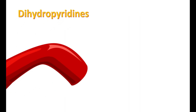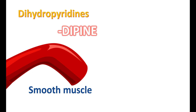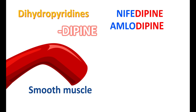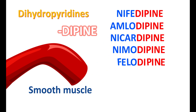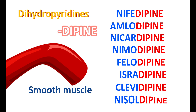Dihydropyridines are one group of calcium channel blockers selective for smooth muscle including vascular smooth muscle. These drugs can be identified easily by their suffix '-dipine,' which indicates they are dihydropyridines. Examples include nifedipine, amlodipine, nicardipine, nimodipine, felodipine, isradipine, clevidipine, and nisoldipine.